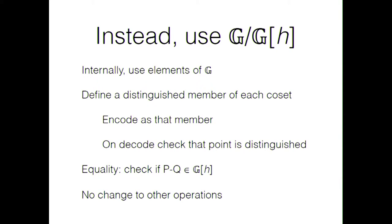The simple proposal of this talk is that instead of using a subgroup, you should use the quotient group G over G[h]. This is the group of equivalence classes of points where the equivalence relation is that two points are considered equal if their difference is in the h-torsion subgroup. In an implementation, you store and add and subtract points as representatives of their coset — just one point representing the whole coset. You only need to change the equality check, since two points are now equal if their difference is in the h-torsion group.